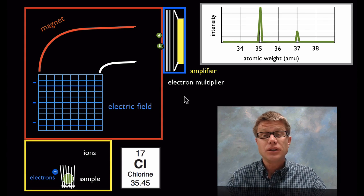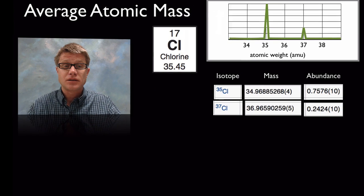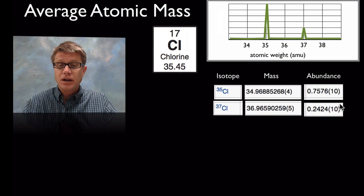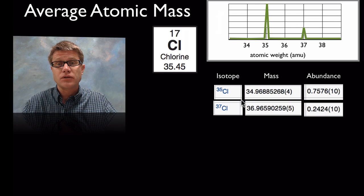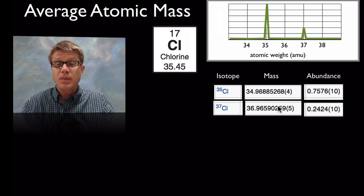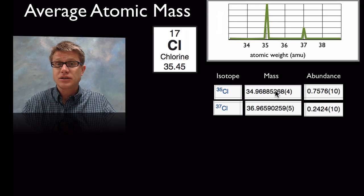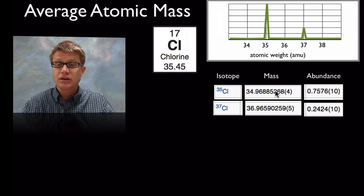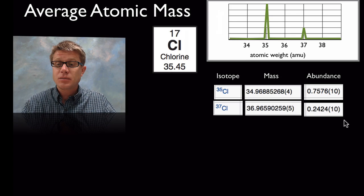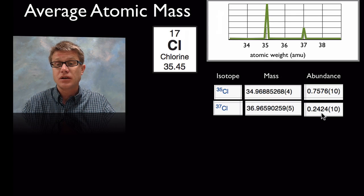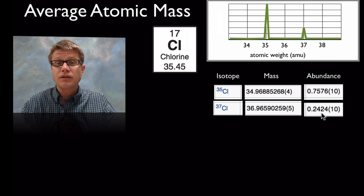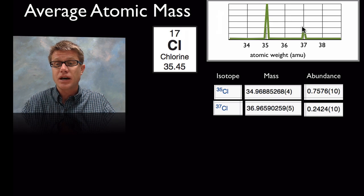Once we've got that, we can really figure out this average atomic mass. So how do we figure that out? I'm using values right here that I grabbed from Wikipedia. Here are going to be the two stable isotopes that we have of chlorine. Here's their actual mass based on the number of protons, neutrons, and electrons inside it. And this is their abundance. It's around 75% of chlorine-35 and around 25% of chlorine-37. That's why this peak is going to be three times the height of this peak.